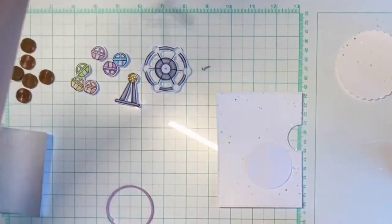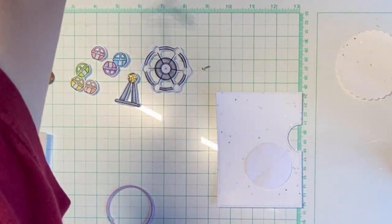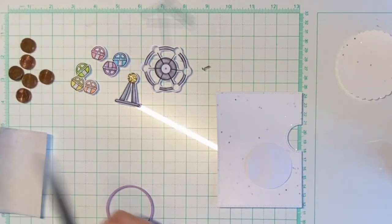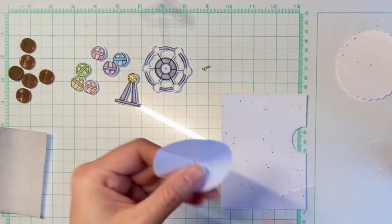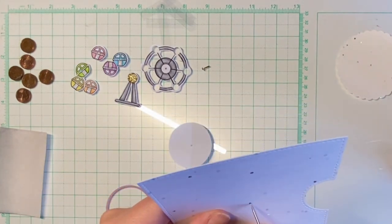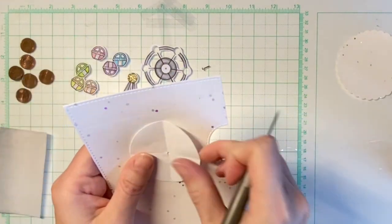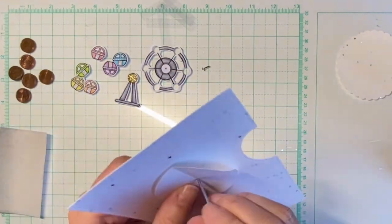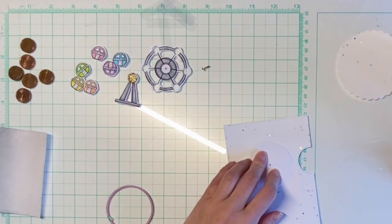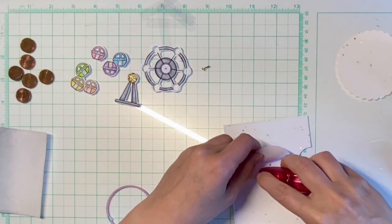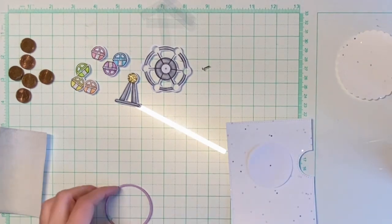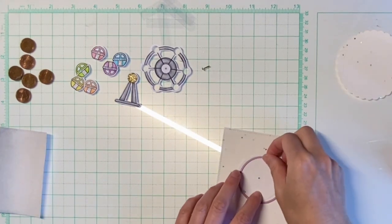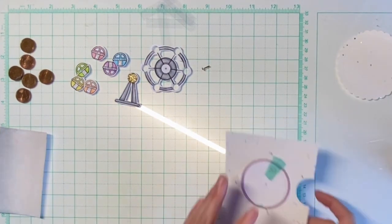And folded it to find the center. Then I poked the hole in both the center of the circle and the center of my reveal wheel base piece. And now I attach that copy paper circle to my base and then pop my die into place and run it through my die cutting machine.